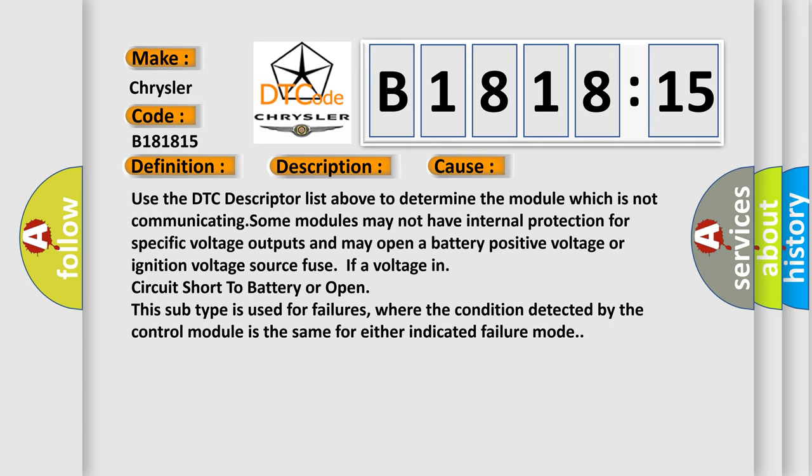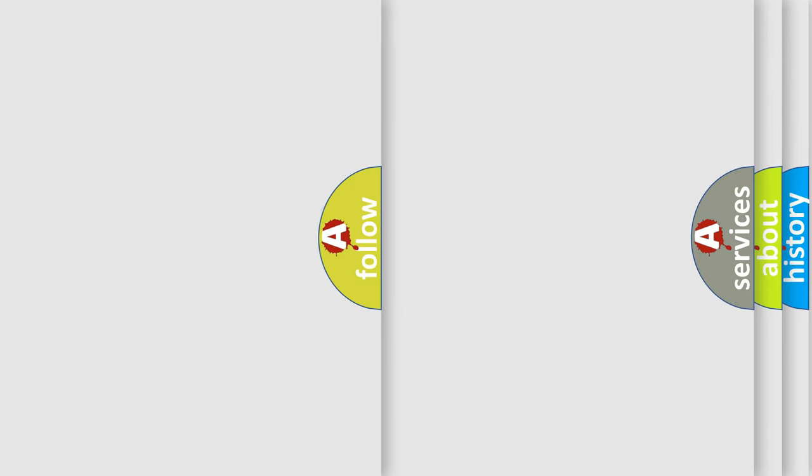This diagnostic error occurs most often in these cases. Use the DTC descriptor list above to determine the module which is not communicating. Some modules may not have internal protection for specific voltage outputs and may open a battery positive voltage or ignition voltage source fuse if a voltage in circuit short to battery or open. This subtype is used for failures where the condition detected by the control module is the same for either indicated failure mode.